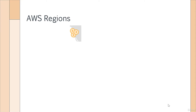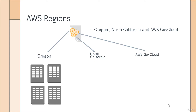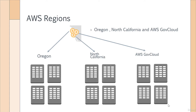Let's take a fraction of that map. Each of these circles represents regions. For example, in this map we have the Oregon, the North California, and the AWS government cloud region. Each region consists of data centers — there could be one or there could be multiple data centers. These are actual physical locations which have physical buildings, and these buildings contain the hardware which AWS uses in order for us as the customer to host our resources on the AWS cloud.